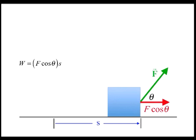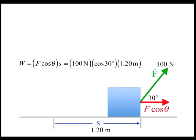For instance, suppose our 100 newton force instead of acting parallel to S was directed at a 30 degree angle above the horizontal. The resulting work would be W equals F cosine theta times S which equals 100 newtons times cosine of 30 degrees times 1.20 meters which equals 104 newton meters or 104 joules rather than 120 joules when the force was acting parallel to S.